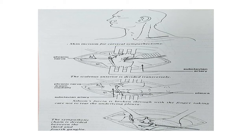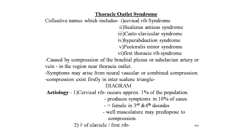Thoracic outlet syndrome is a collective name including cervical rib syndrome, scalenus anticus syndrome, costoclavicular syndrome, hyperabduction syndrome, pectoralis minor syndrome, and first thoracic rib syndrome. It is caused by compression of the brachial plexus and subclavian artery or vein near the thoracic outlet. Symptoms arise from neural, vascular, or combined compression in the interscalene triangle. Etiology: cervical rib occurs in approximately 1% of the population, producing symptoms in 10% — more females in the third and fourth decades are affected. Well-developed musculature and clavicle fractures may also predispose to compression.